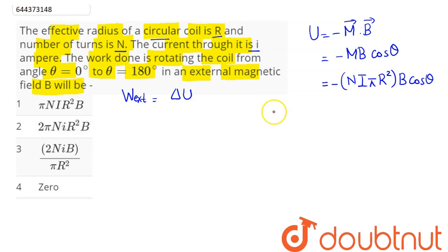So here initial potential energy we can say here comes out to be for theta equal to 0 degree. This is equal to minus N into I into pi into R square into cos of 0 degree. So this here is cos 0 degree which is equal to 1.